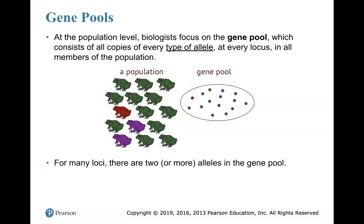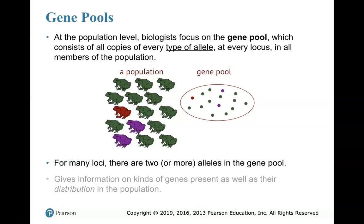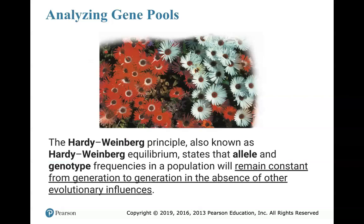For many locations on a chromosome where we find alleles — this is called a loci — there are two or more alleles. Remember that we get two, one from each parent. So a gene pool considers both. Remember that we only see the dominant allele since it masks the recessive allele. In a gene pool, you also consider that recessive allele since it can be inherited in subsequent generations, as we saw with Mendelian genetics. A gene pool gives us information on all kinds of genes present as well as their distribution — how many individuals have that allele, how often is it found. That's going to be termed a frequency.